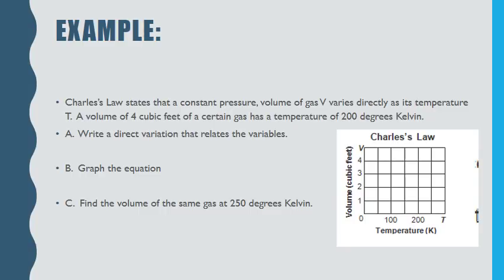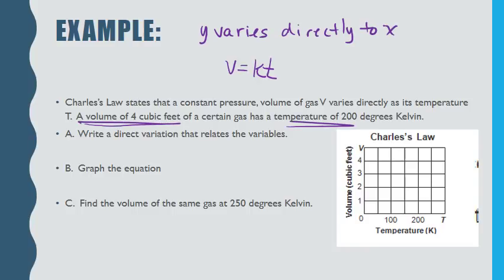For this word problem, I want you to understand that we say that y varies directly to x or as x. So in this case, we have Charles' law. It states that at constant pressure, volume of gas varies directly as its temperature T. So V varies directly, we got to have our k, as its temperature T.